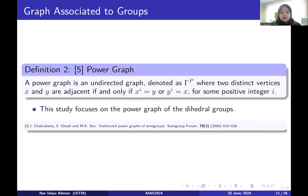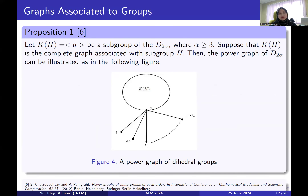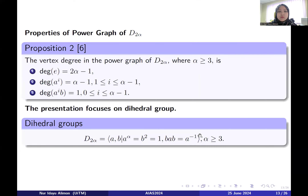A power graph is an undirected graph, denoted as gamma, where two distinct vertices X and Y are adjacent if one is a power of the other for some positive integer i. This study focuses on the power graph of the dihedral groups. Based on previous research, the power graph of the dihedral groups has been generalized: K_H denotes the subgroup of the dihedral groups and represents the complete graph. The degree of vertex E is 2α−1, the degree of vertex A^i is α−1, and the degree of A^i B equals 1.